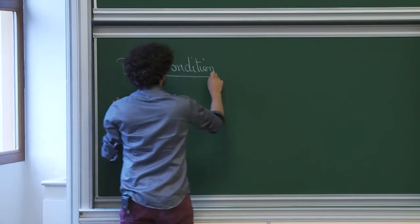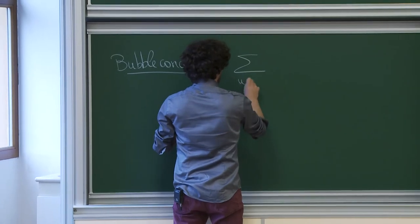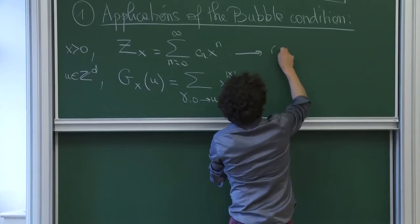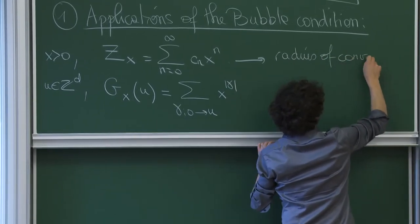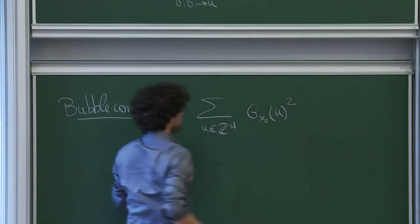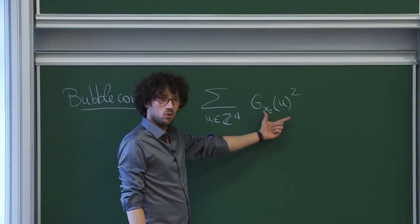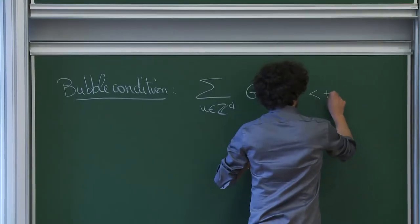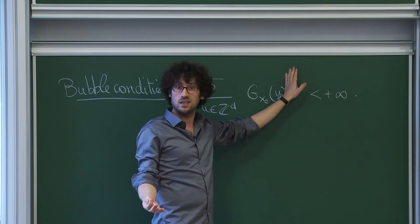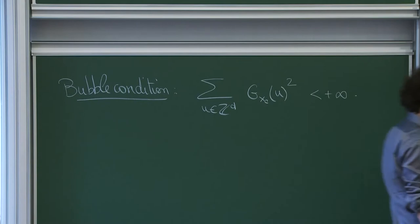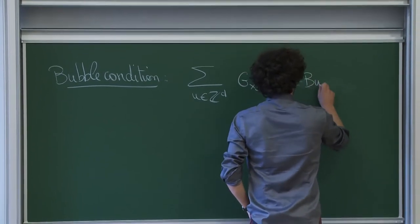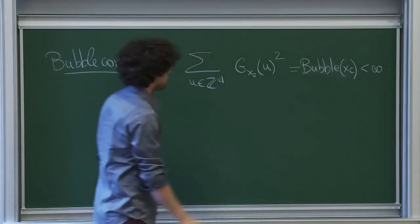The bubble condition is the following. You assume that the sum over every u in Z^d of g_{x_c} of u squared is finite. Remember that there is a radius of convergence x_c, which is 1 over the connective constant. So I assume that when I sum over every vertex, the green function of the self-avoiding walk squared, I have something finite. Notice that the square is very important. If you just do the sum without squaring, this is just z of x_c, and we saw that z of x_c was infinite. So you need to square it. This quantity we will call bubble(x_c), and the assumption is that this is finite.